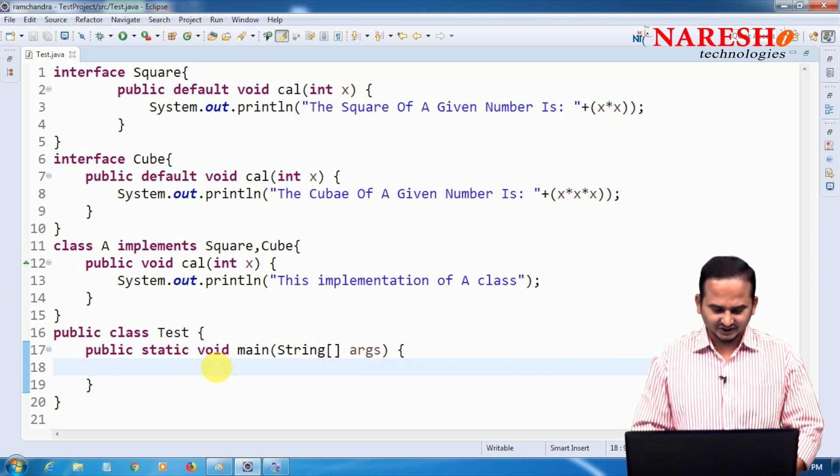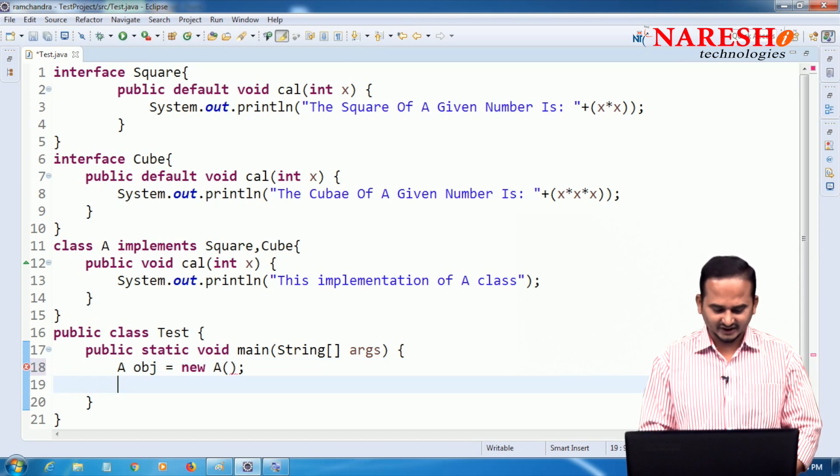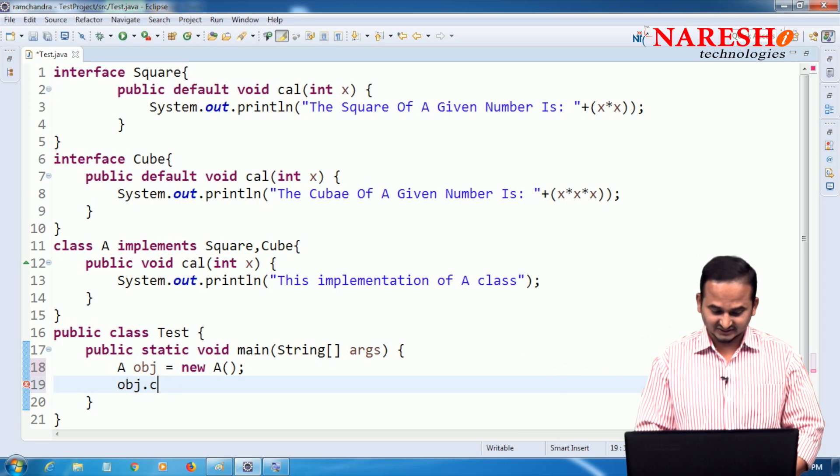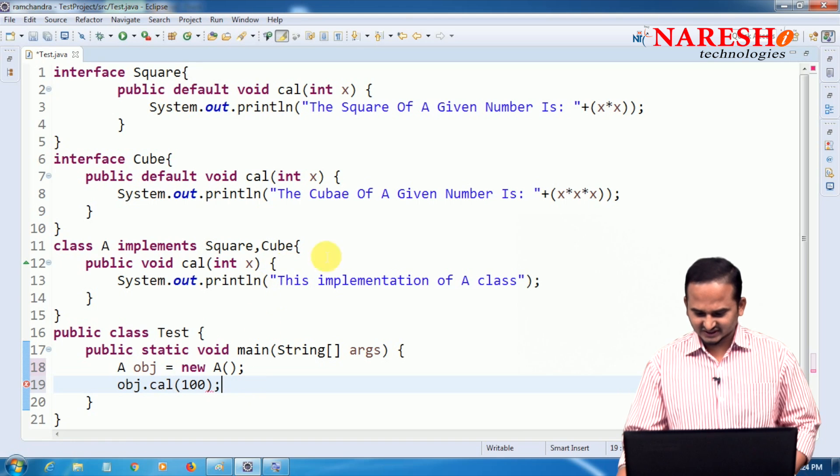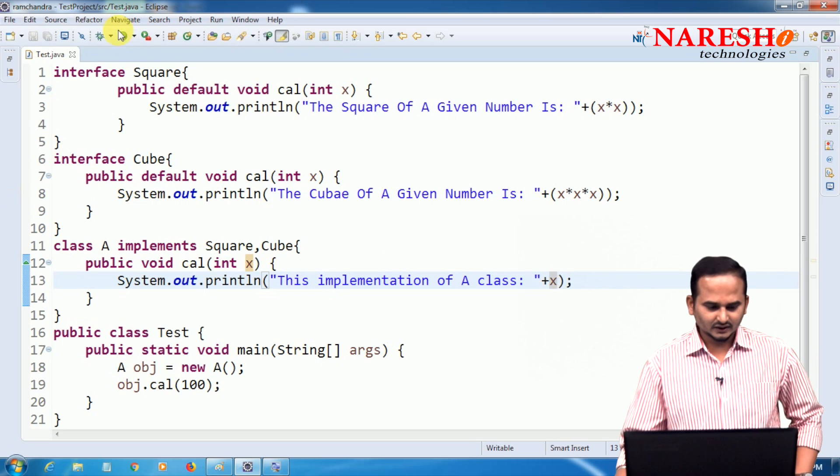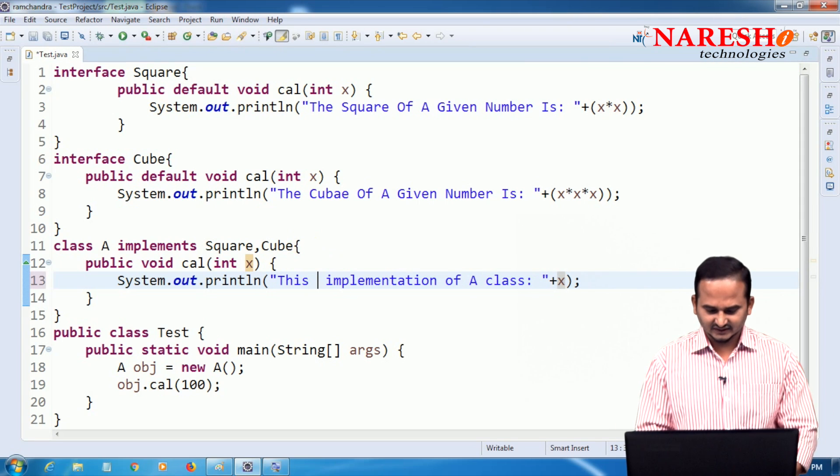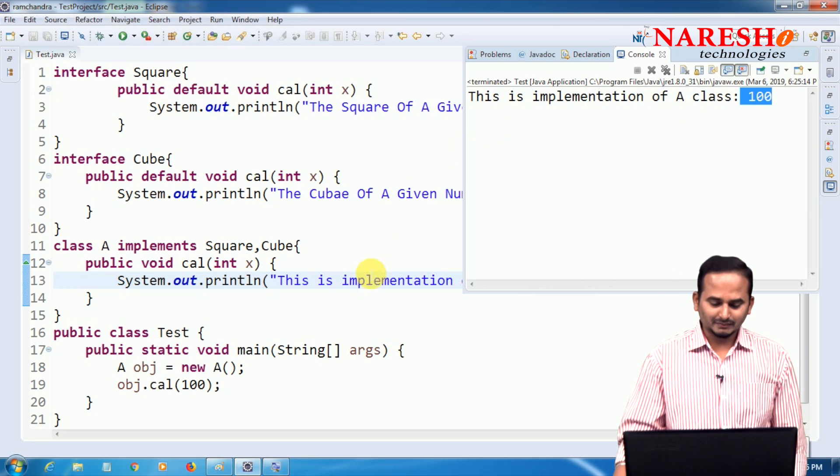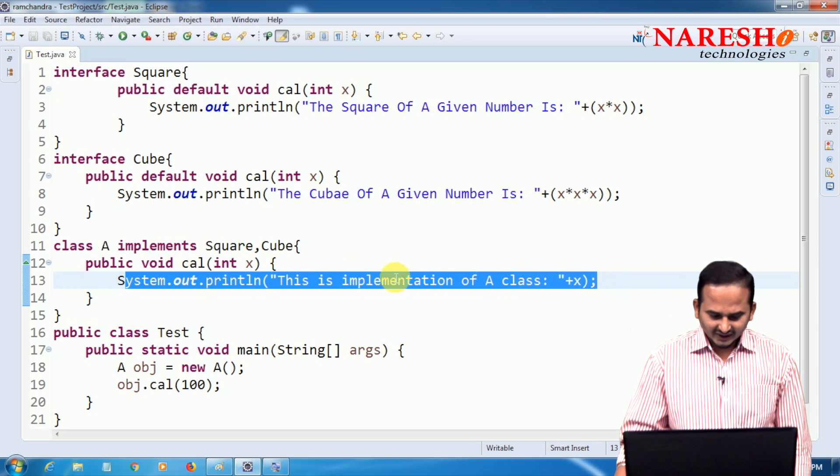Then that is a non-static method. Cal is the non-static method of A class. Then how can we call it? By creating an object. A obj equal to new A and this is your cal method. Now I am passing like 100. Just I am checking whether that value is coming to x or not by printing x value. Now if you observe the output, you will get output like this is implementation of class A and the value is 100.